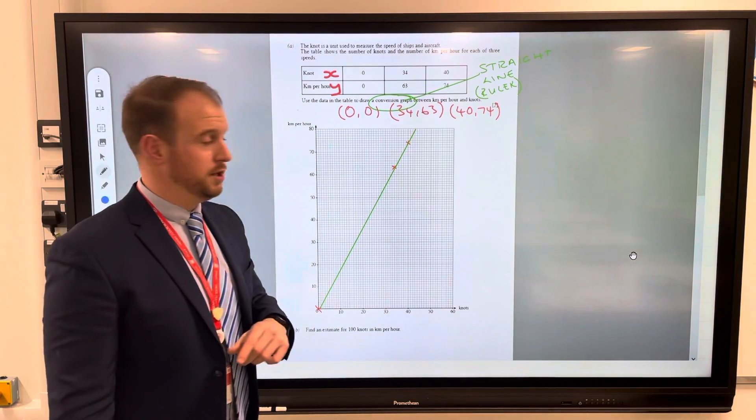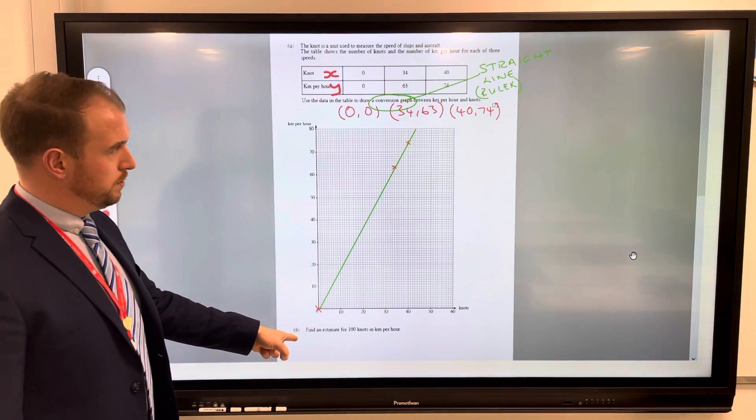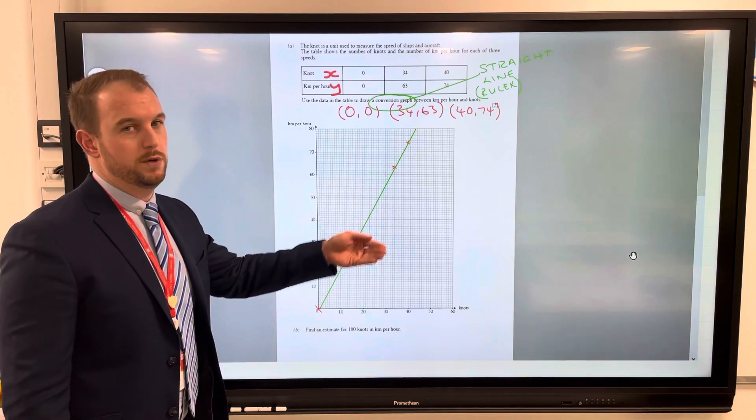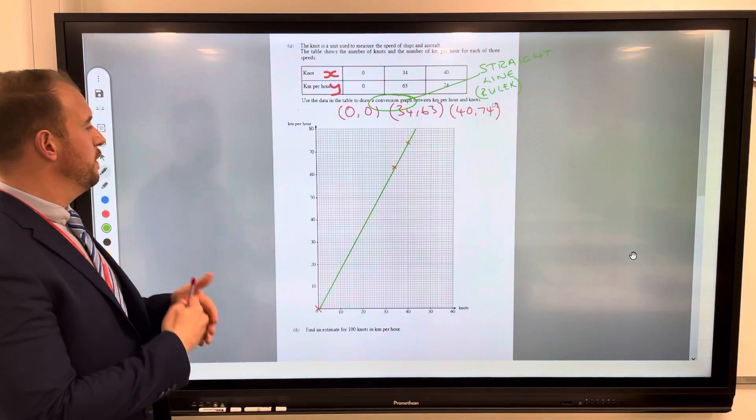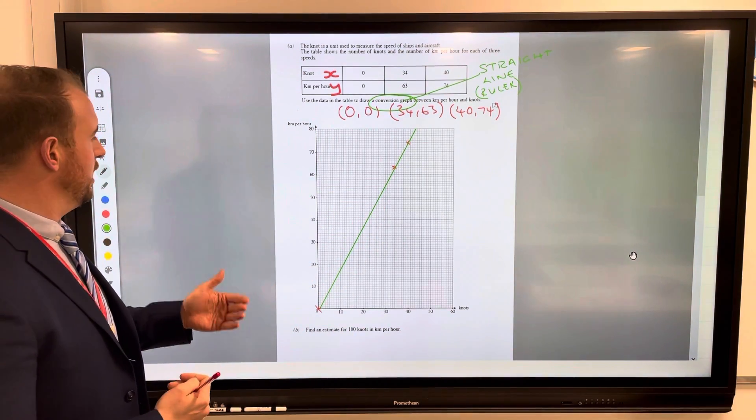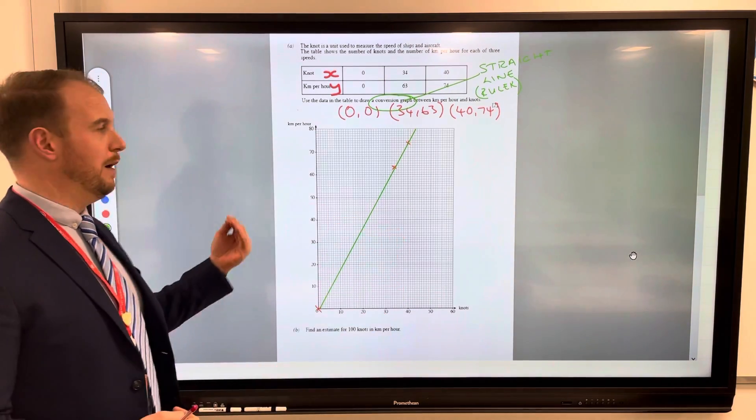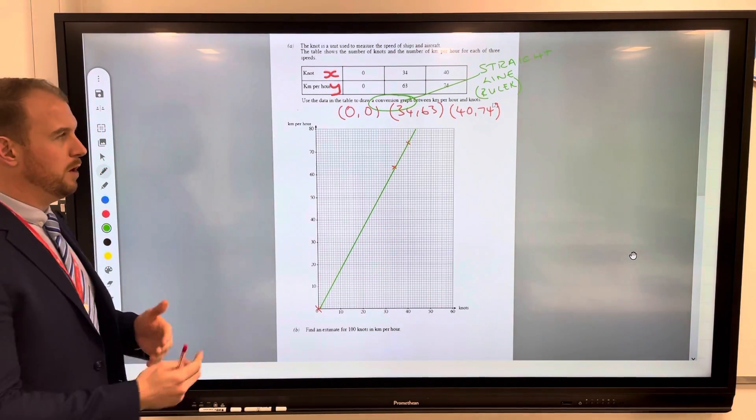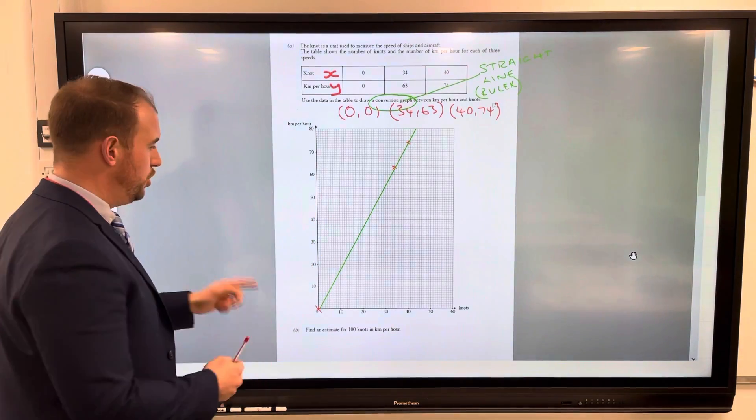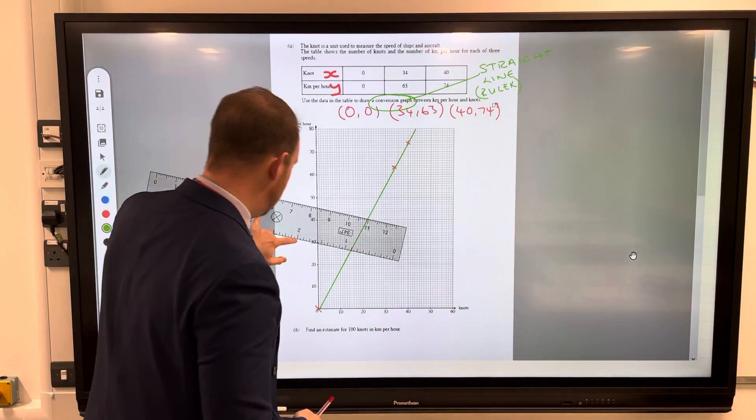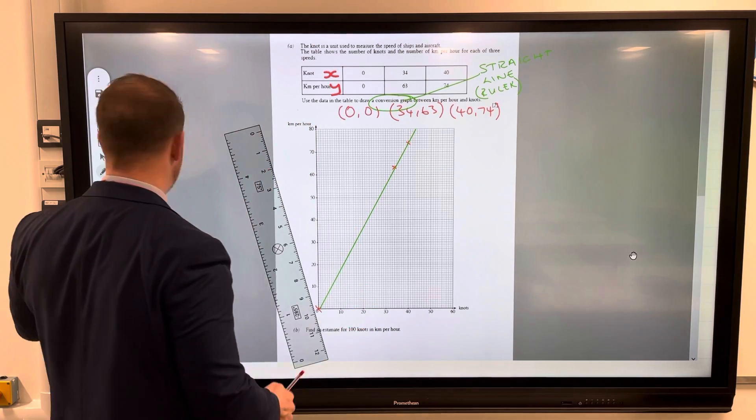So that's two marks so far. You'll also notice you get questions that say find the answer by using the graph. The first one could be something like at 30 knots how many kilometers per hour would that be. So if you're answering a question based on this, use the line to help you. I'll even use a ruler. So let's use that as an example. Let's look for 30 knots.